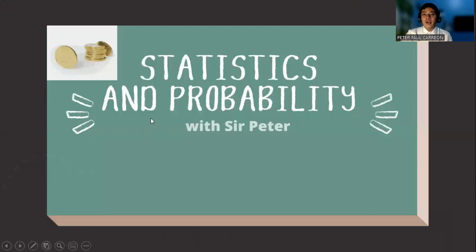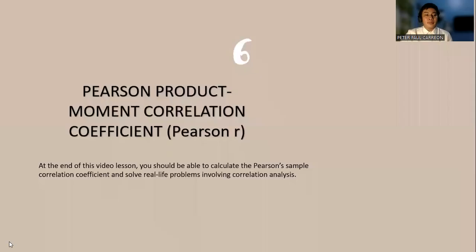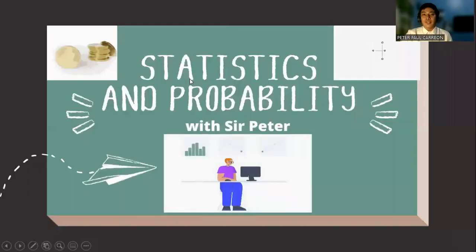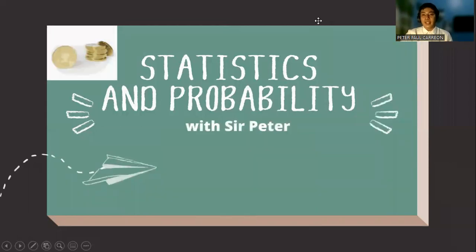So that is our discussion about the scatterplot diagram. So on the next lesson, we will talk about how to compute for Pearson R, which is also one way to describe correlation. Again, this is Sir Peter, your statistics and probability teacher.